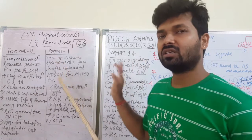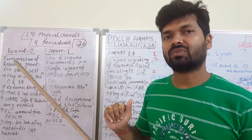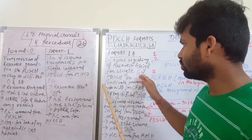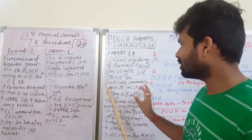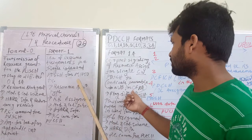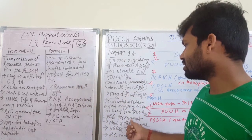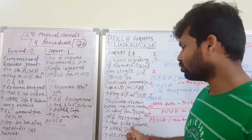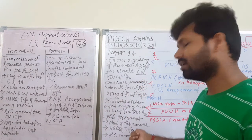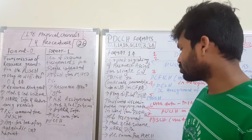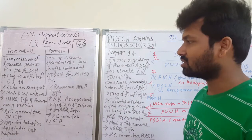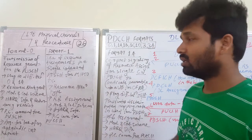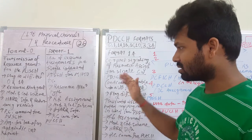Format 1A is used for distributed mapping for the PDSCH, and for a single codeword it allocates a dedicated preamble for a UE for contention-free random access. It also includes resource block assignment for the PDSCH, modulation and coding schemes, HARQ information and related parameters, and importantly the power control command for the PUCCH — Physical Uplink Control Channel.